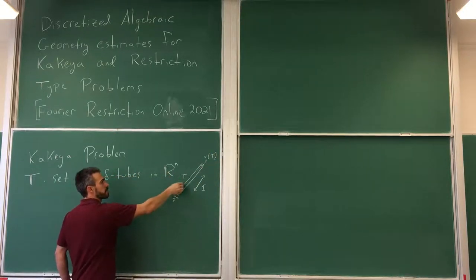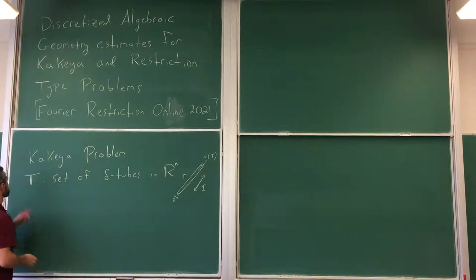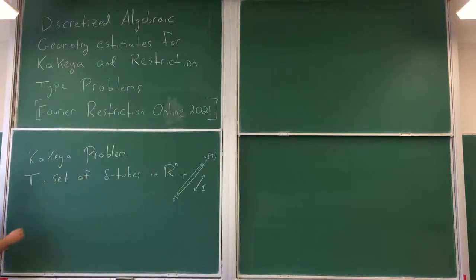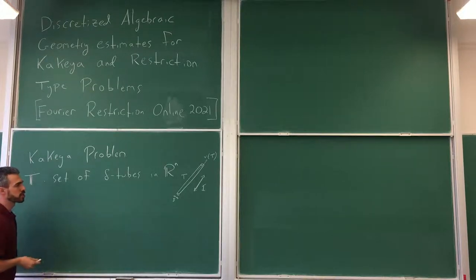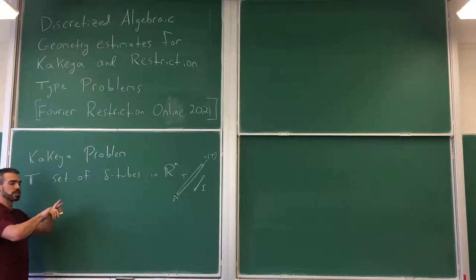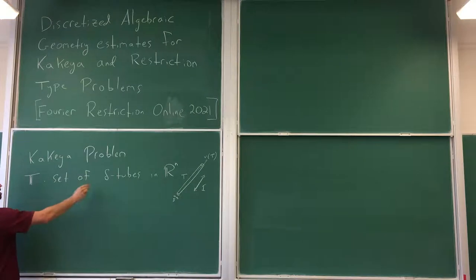I have this set T, which is a collection of delta tubes in R^n, and I'll ask that they point in different directions. Not only that, but for any two distinct tubes, their directions differ by at least delta — so they point in delta-separated directions.